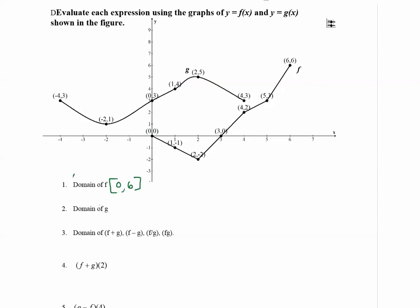Now the domain of g. g starts at x equals negative 4, and it ends at x equals positive 4. And we use brackets for those endpoints as well.